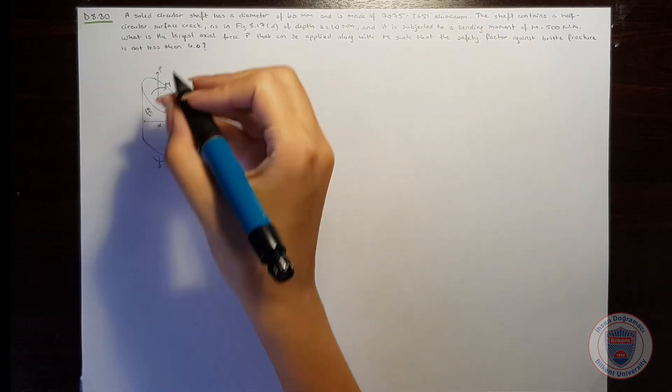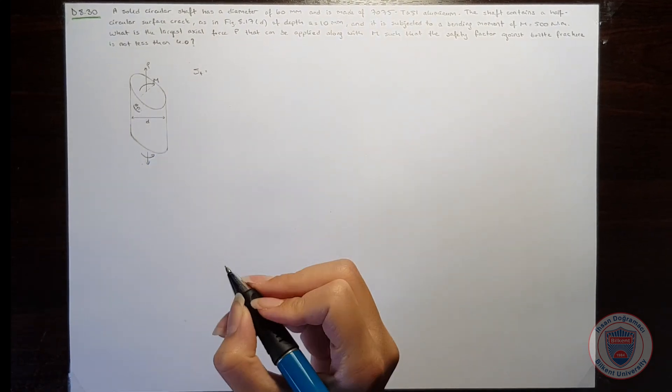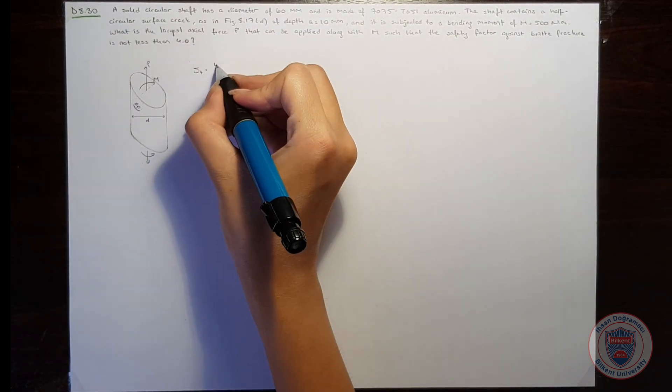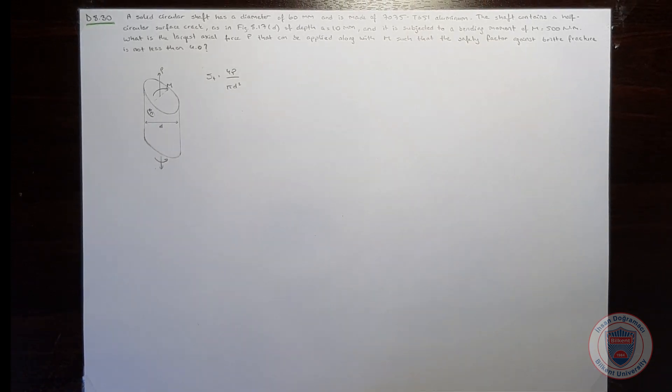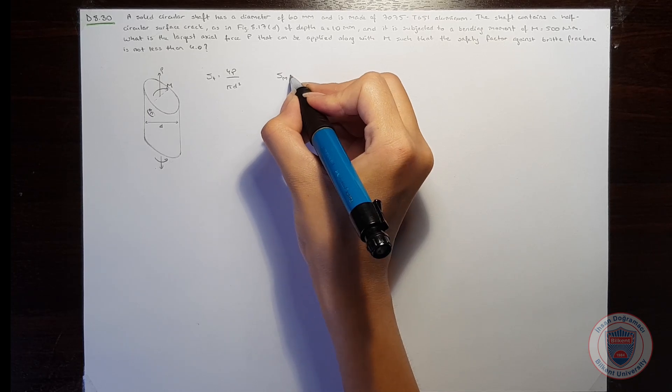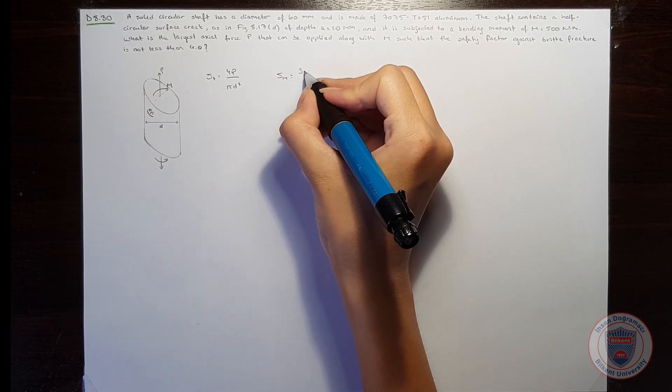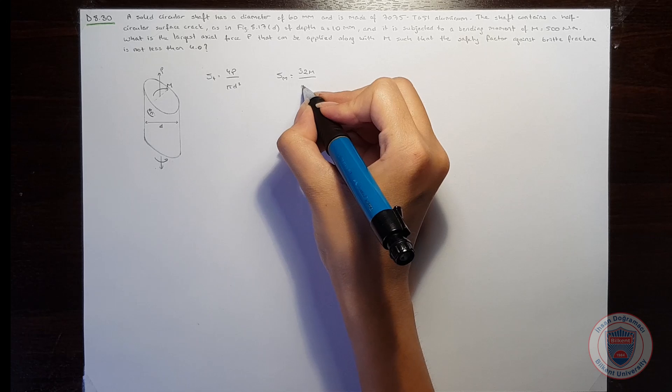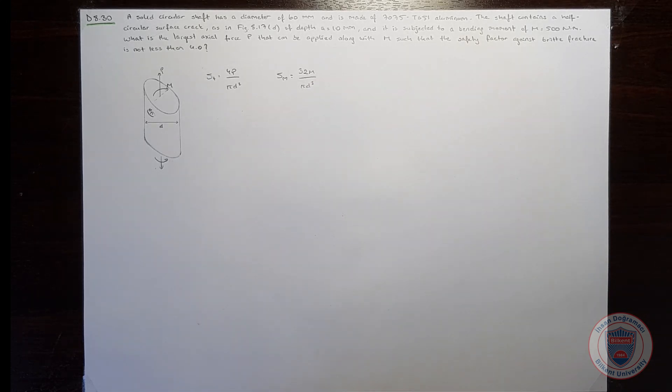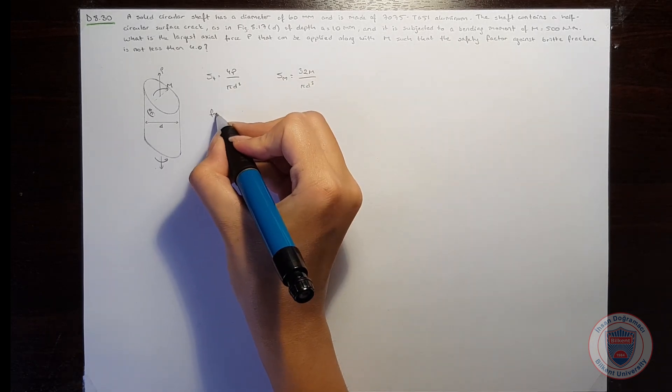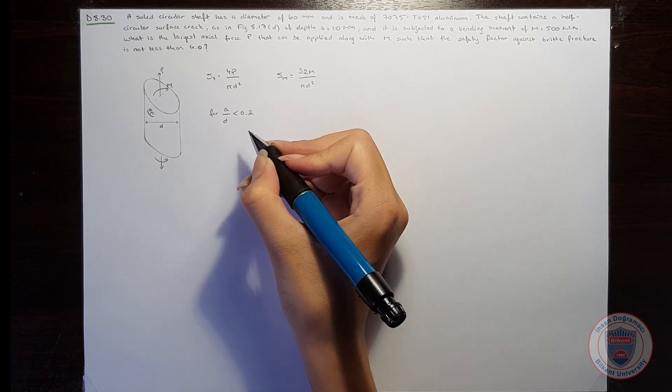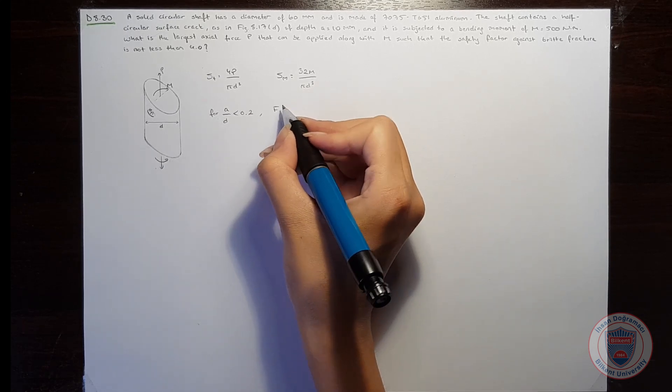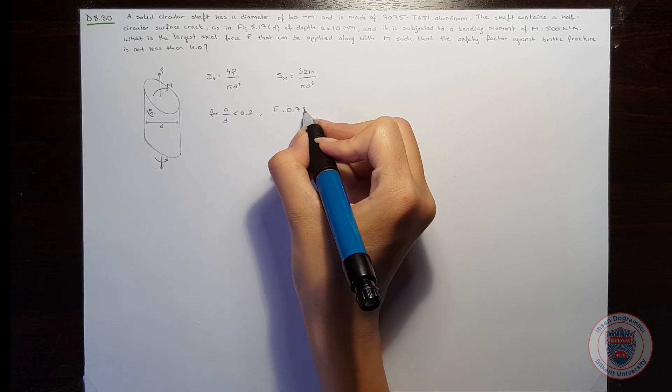When we look at figure 8.17D, we see that the stress caused by the axial force will be 4P over pi D squared, and the stress caused by the bending moment will be 32M over pi D cubed. Also, we have the information that for A over D smaller than 0.2, we can use the form factor as 0.728.